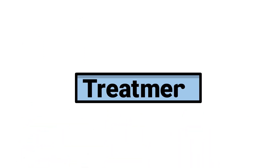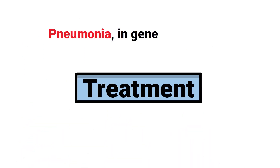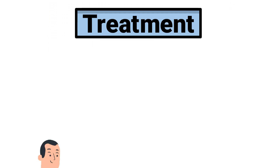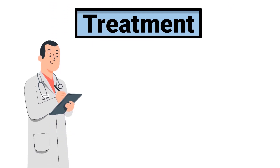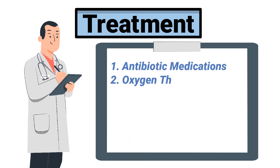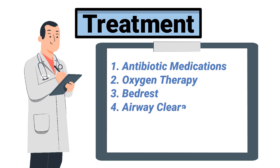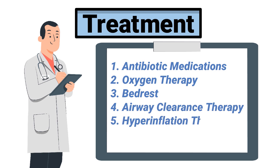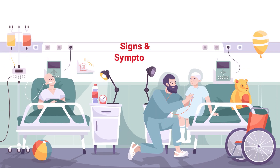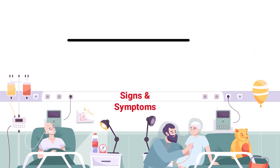Now let's talk about treatment. Pneumonia in general should be treated on a case-by-case basis. Some of the most common treatment methods include antibiotic medications, oxygen therapy, bed rest, airway clearance therapy, hyperinflation therapy, and fluid management. Each patient may require different treatment modalities depending on their signs and symptoms.